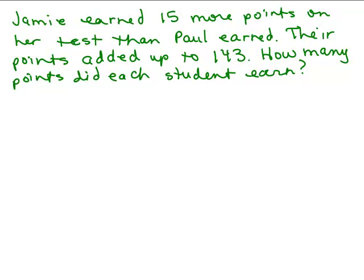Jamie earned 15 more points on her test than Paul earned. Their points added up to 143. How many points did each student earn? So we're trying to find out how many points Jamie earned on her test and Paul earned on his test, so we need to define both those.